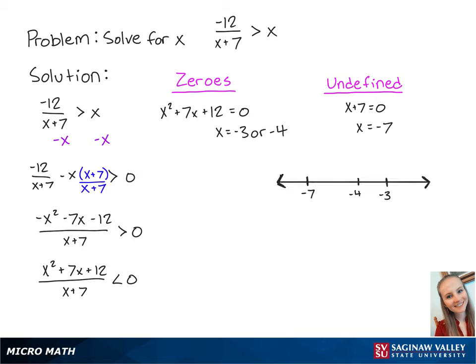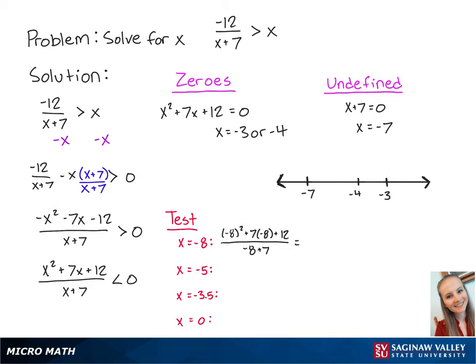Now we're going to use this number line to find the values of x that make the inequality a true statement. We're going to do this by plugging in values of x from each region. For x equals negative 8, we have negative 8 squared plus 7 times negative 8 plus 12, all over negative 8 plus 7, which is equal to negative 20. Since this number is negative, this means that x values less than negative 7 will make the left side of the inequality negative.